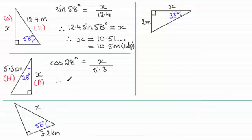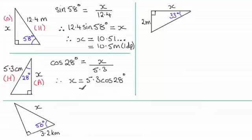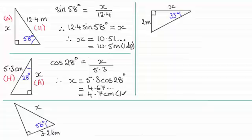We need to remove 5.3 from the denominator by multiplying both sides by 5.3, giving X = 5.3 × cos(28°). Working this out on your calculator gives 4.67..., which rounds to 4.7 centimeters to one decimal place. Again, check: your answer is less than the hypotenuse, so good chance it's correct.